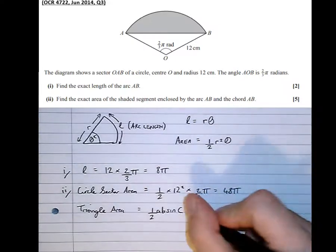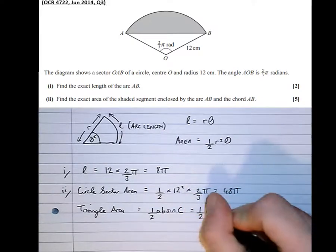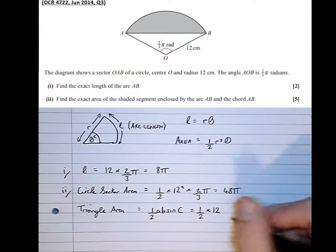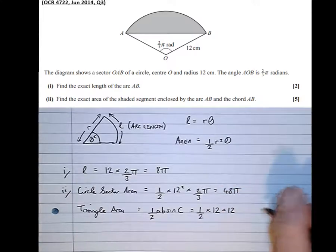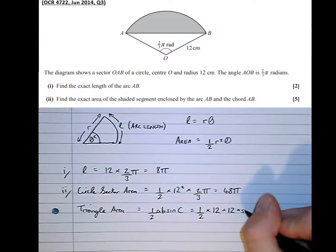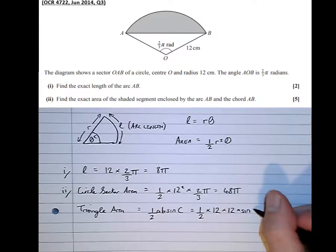OK, so that is a half times one of the sides, 12, times the other side, 12, times the sine of the angle, sine of 2 thirds pi. Let's type that in there.